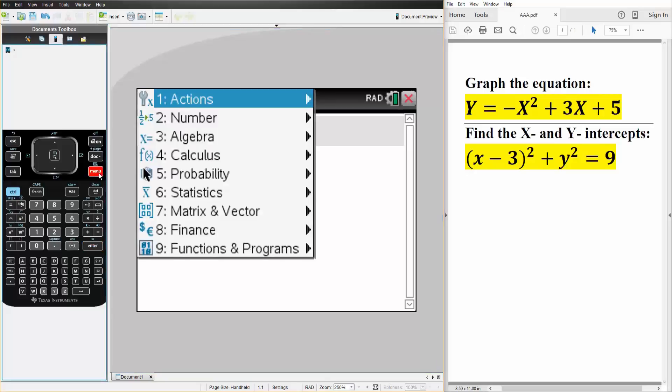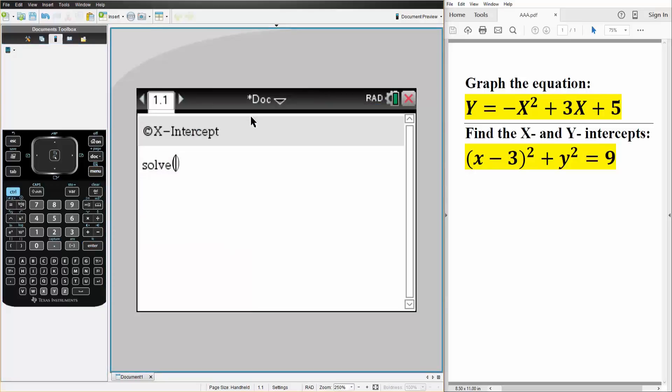So first I'm going to get the x intercept. In order to get the x intercept, I hit menu, I hit algebra, solve. The x intercept is going to set y equal to zero and we solve for x. So we would have x minus three squared, essentially y is going to be zero, so we can just say zero squared is equal to nine.